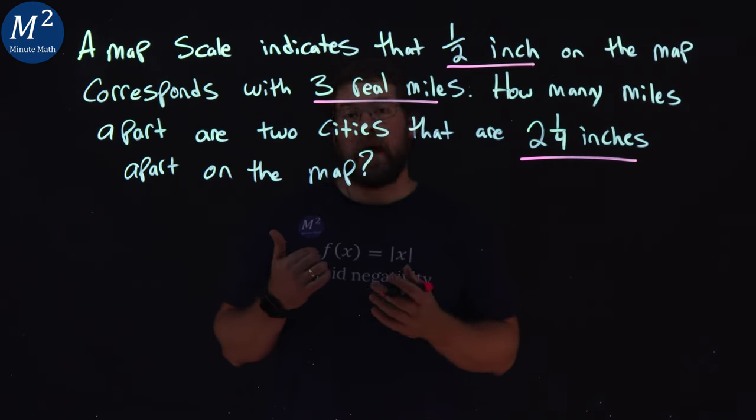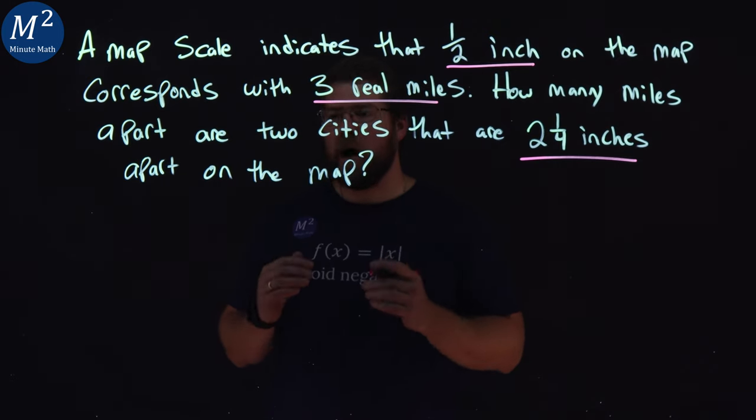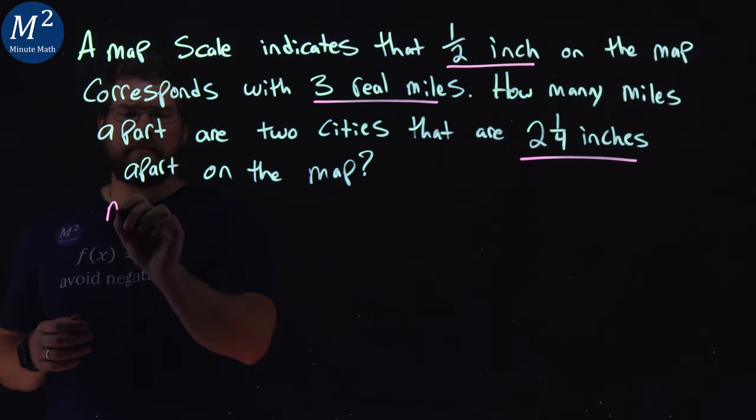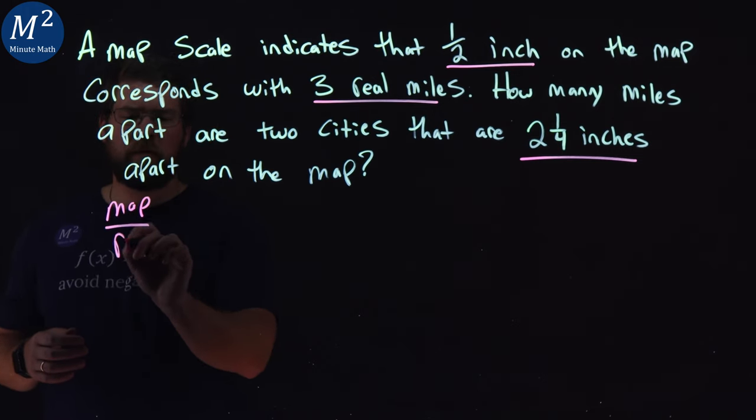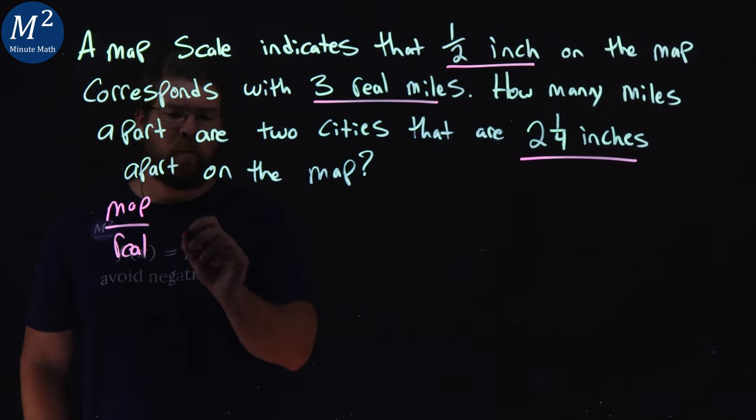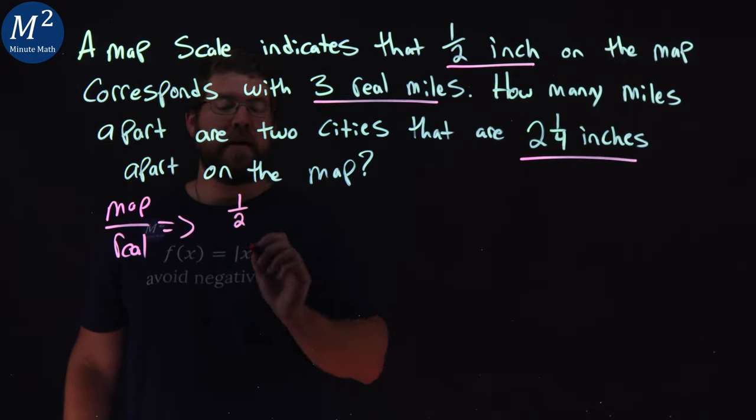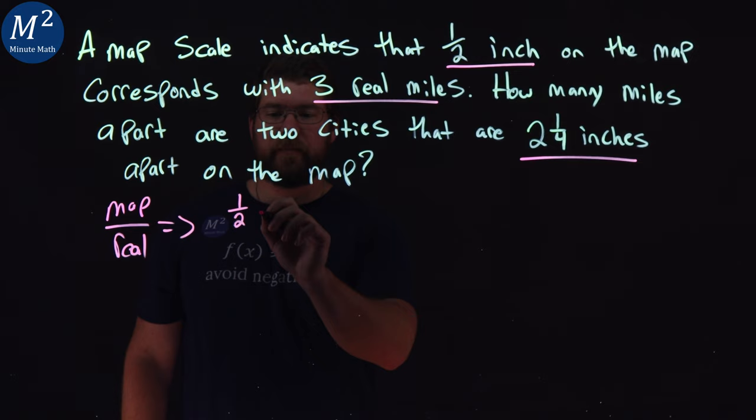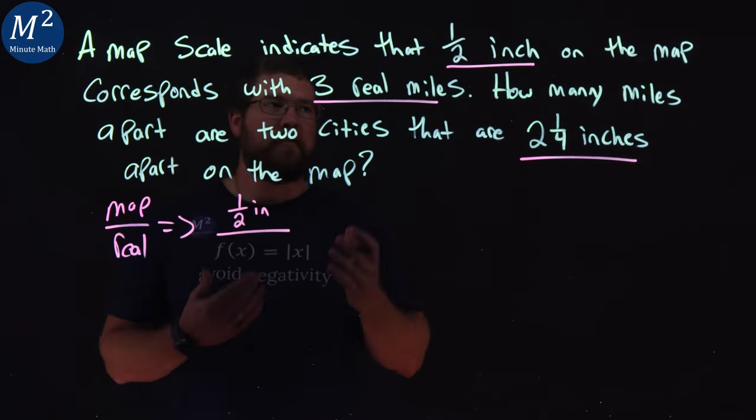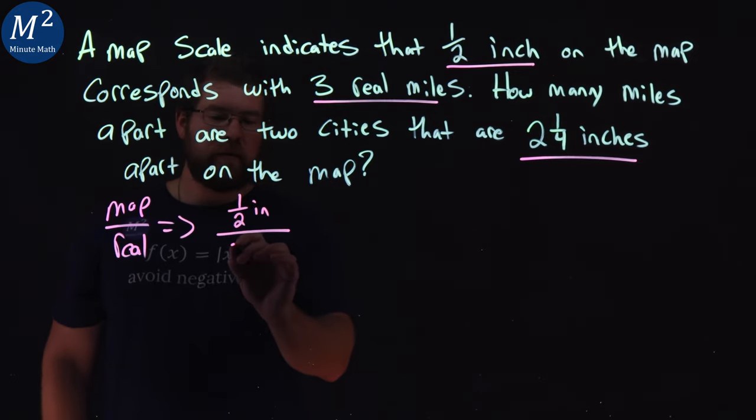So let's set up a proportion here of the map basically over the real. So what they tell us in the first part is that one-half inch on the map is the same as three miles.